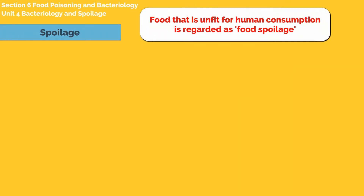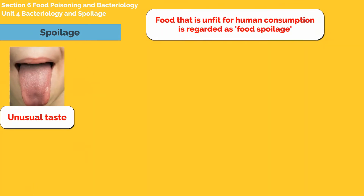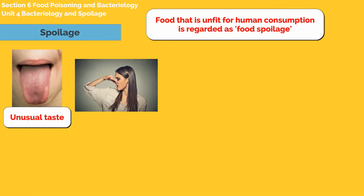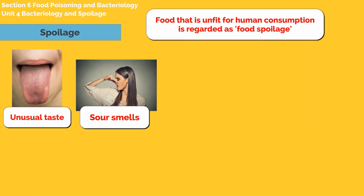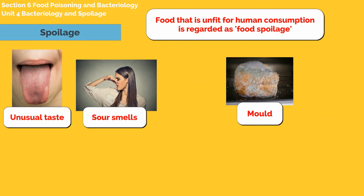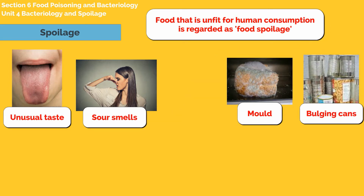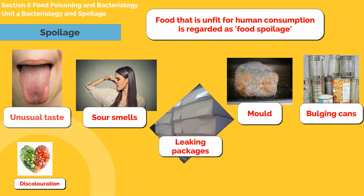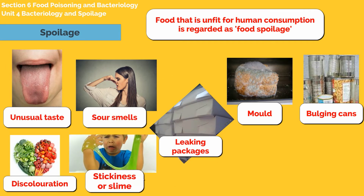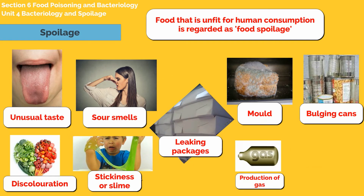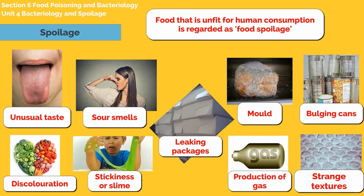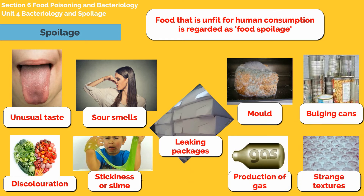Food that is unfit for human consumption is regarded as food spoilage. It is identified by having an unusual taste, sour smells, mould, bulging cans, leaking packages, discolouration, stickiness or slime, production of gas and strange textures.